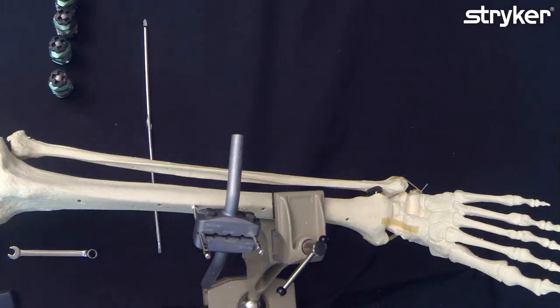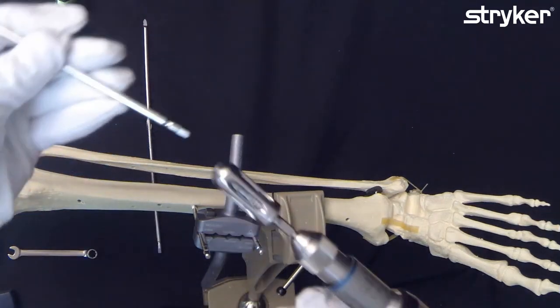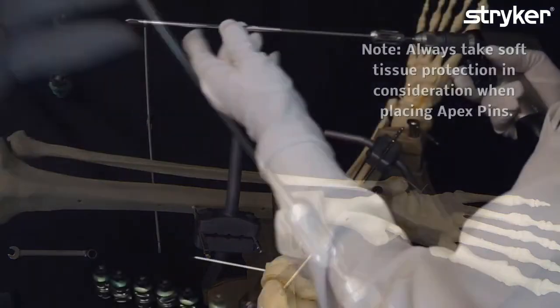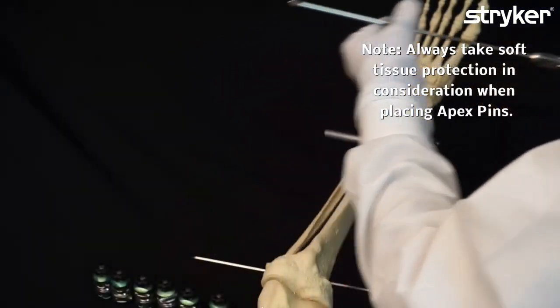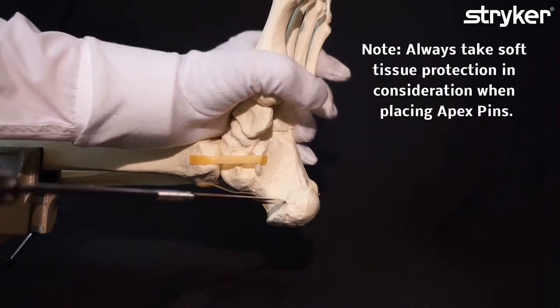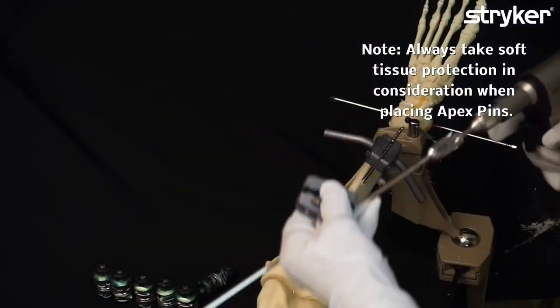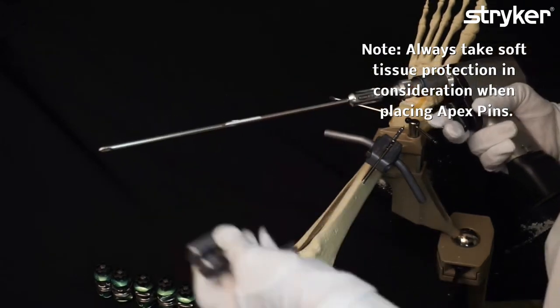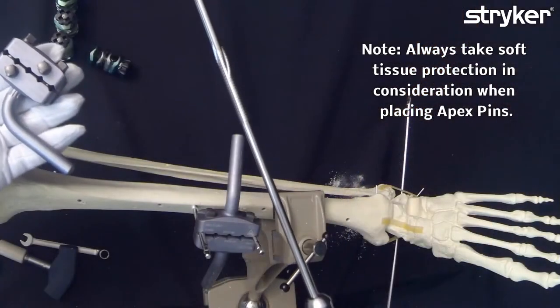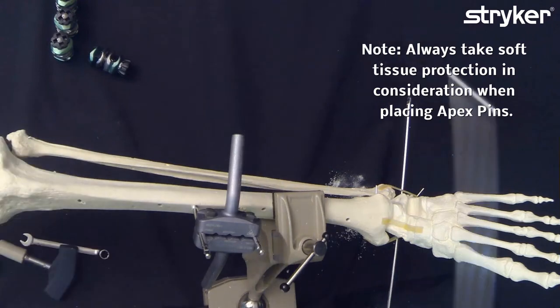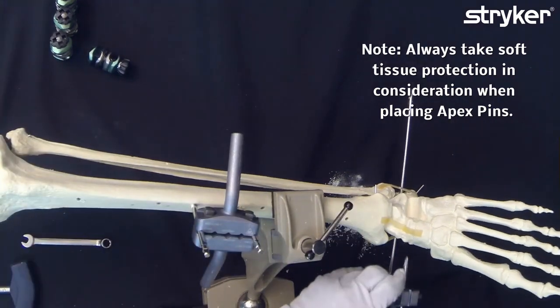Then the next step is to insert the transfixing pins of five millimeter to six millimeter transfixing pins with a quick chuck. We take a 90-degree post in a five-hole pin clamp and place it over.